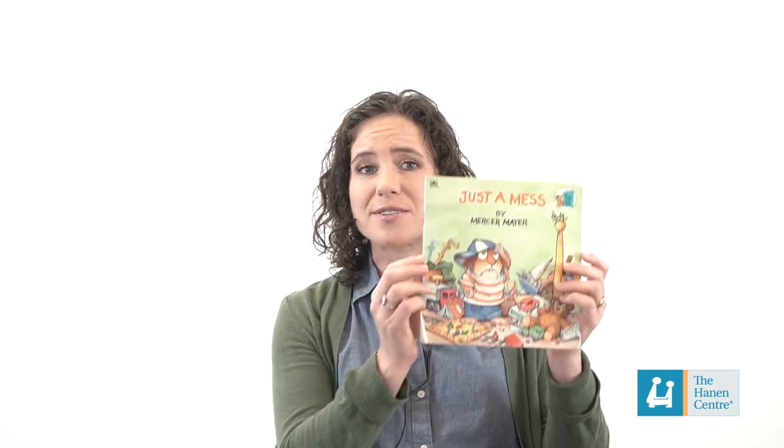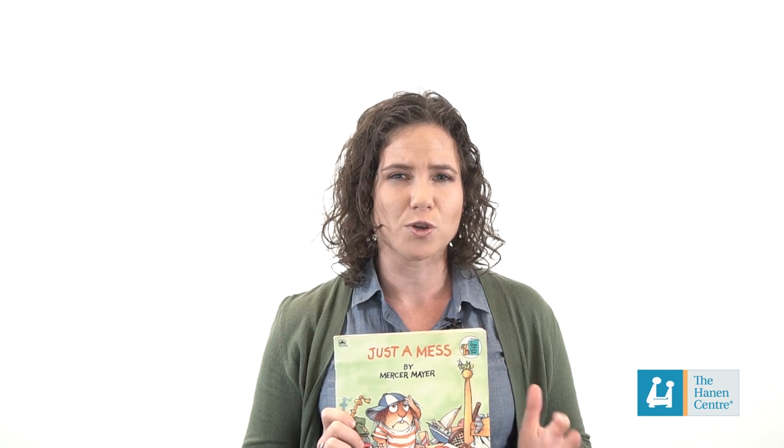The book I've chosen for building an understanding of story structure is Just a Mess by Mercer Mayer. I love the Little Critter series because there are a few main characters, there are lots and lots of problems, and the storylines are pretty simple and straightforward, so those CASPER elements are very clear, which makes them easy to highlight and talk about.